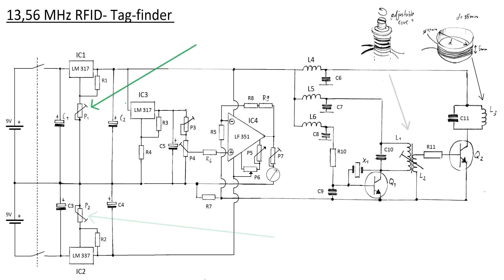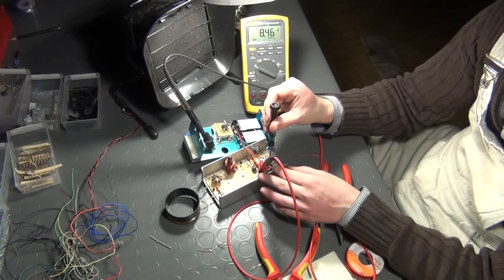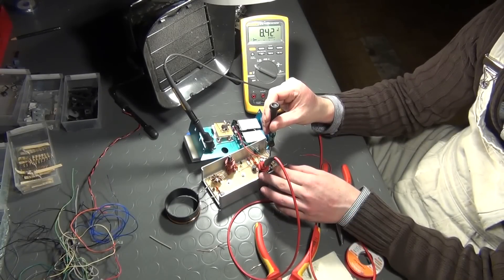First, the trim pots P1 and P2 are tweaked so that the output voltages of IC1 and IC2, named V1 and V2, are equal in absolute value but reversed in polarity. Considering the voltage drop over the regulators, these voltages can be adjusted to some value between 7 and 8 and minus 7 and minus 8 volts respectively. The actual value is less important than the equality of both absolute values.